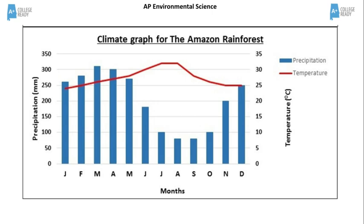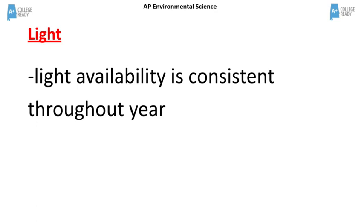In the climate diagram, you see the temperature remains relatively constant throughout the year, with a slight increase between June and August. The precipitation is much higher than the other biomes. Light availability is consistent throughout the whole year.